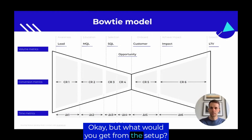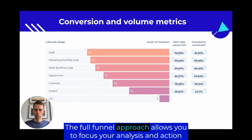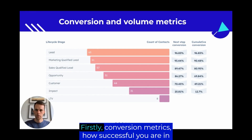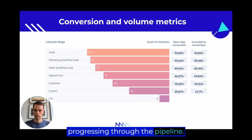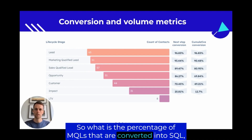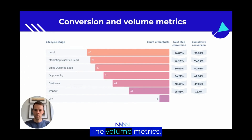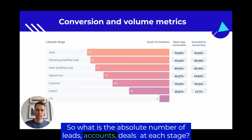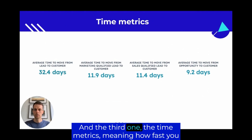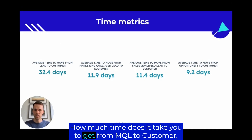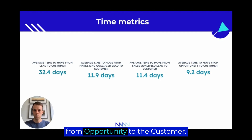What would you get from this setup? The full funnel approach allows you to focus your analysis and action on three main dimensions. First, conversion metrics — how successful you are in progressing through the pipeline, such as the percentage of MQLs converted into SQLs, and then eventually to customer, impact, and lifetime value. Second, volume metrics — the absolute number of leads, accounts, and deals at each stage. And third, time metrics — how fast you progress through the funnel, such as how long it takes to get from MQL to customer, or from opportunity to customer.